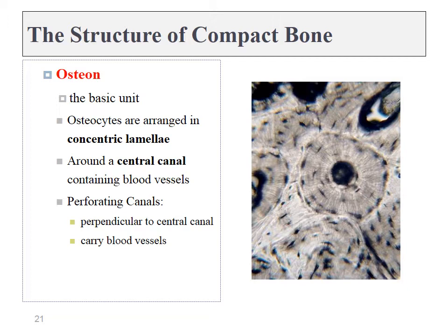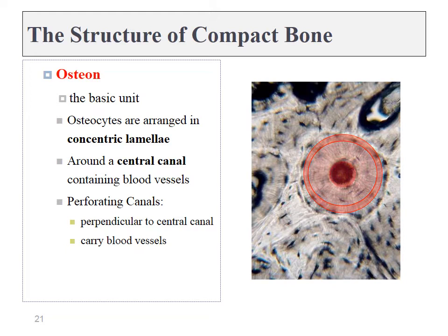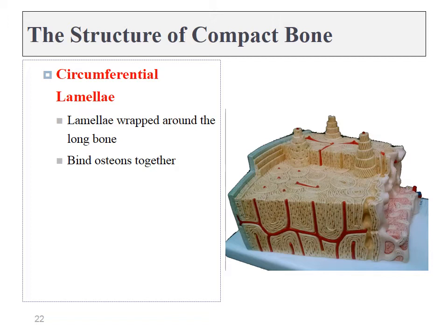Compact bone tissue is organized in repeating units called osteons. These osteons contain concentric layers, or lamellae, which all circle around a central canal where blood vessels and nerves are located. Perforating canals connect from one central canal to another. The concentric lamellae circle around a central canal, while circumferential lamellae are around the circumference of compact bone tissue at the edges, binding all of the osteons together.